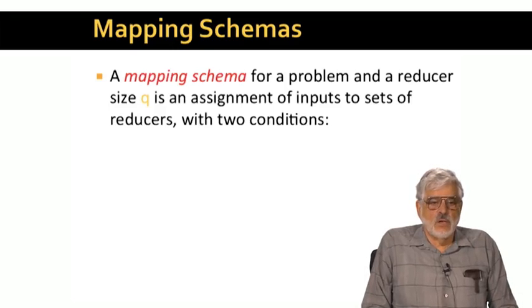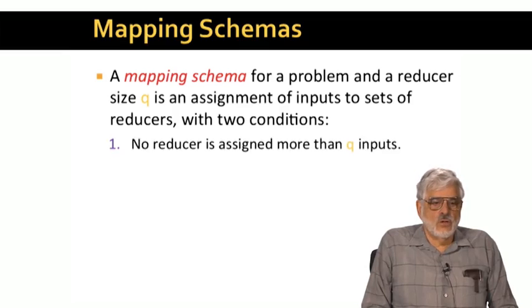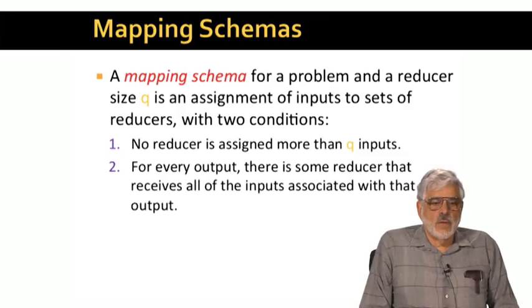So let's define a mapping scheme for a given problem, and for a given reducer size Q, to be an assignment of each input to a set of one or more reducers. There are two conditions this assignment must obey in order for the mapping scheme to be considered as solving the problem with this reducer size. First, of course, we can't assign more than Q inputs to any one reducer.